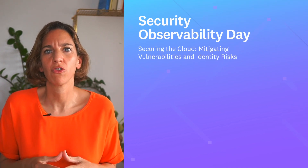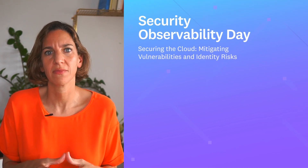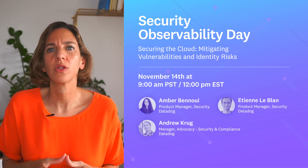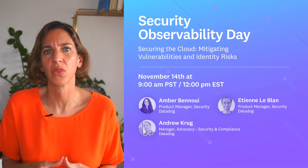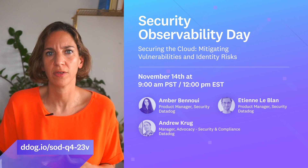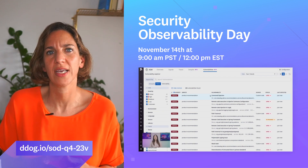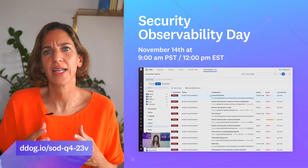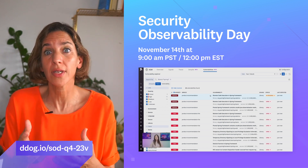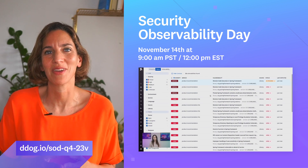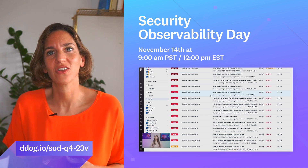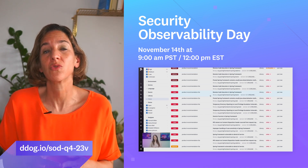Before we go, we wanted to let you know about our upcoming event, Security Observability Day, where we'll discuss mitigating vulnerabilities and identity risk. This virtual event will be happening on November 14th at 12pm Eastern. Don't miss this opportunity to hear from Datadog security experts to learn more about our latest innovations to secure your cloud native infrastructure and applications. Check out the link in the show notes to learn more and to register.